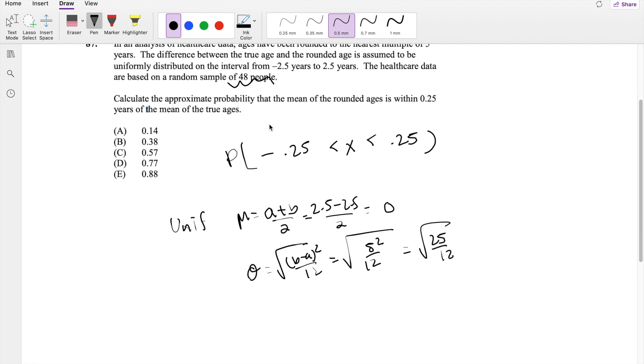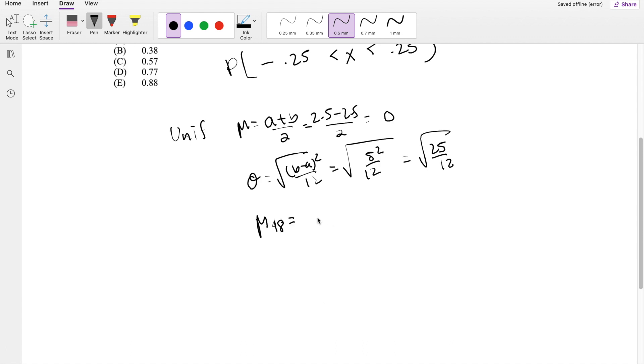But then we're asked to do it for 48 people. The mean of 48 is just going to be 0 plus 0, 48 times, so it's just going to be 0. For the standard deviation of 48, this is equal to the square root of variance of...